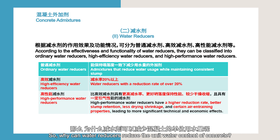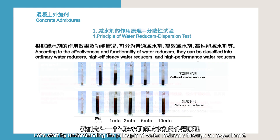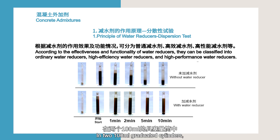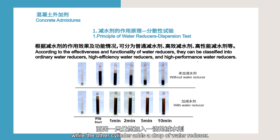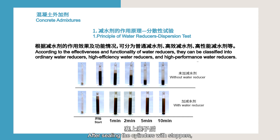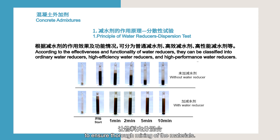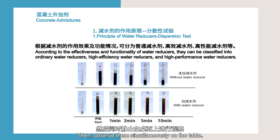Why can water reducers reduce the unit water content of concrete? Let's understand the principle of water reducers through an experiment. In two 100 mm graduated cylinders, add 10 g of cement and 80 ml of water each. One cylinder does not add a water reducer, while the other cylinder adds a drop of water reducer. After sealing the cylinders with stoppers, shake them vigorously several times to ensure thorough mixing. Then observe them simultaneously on the table.